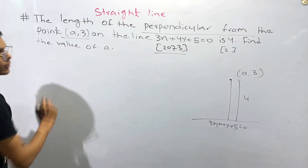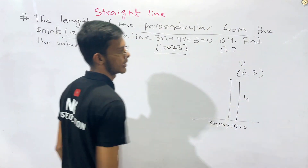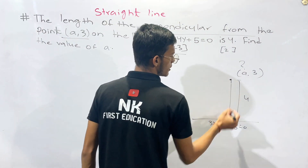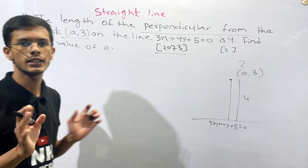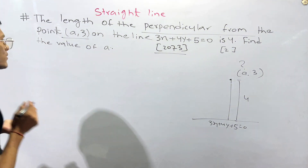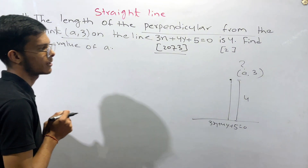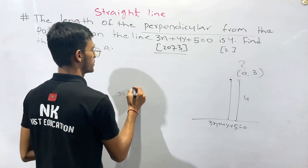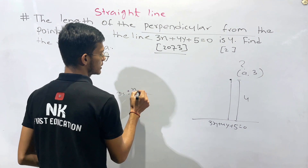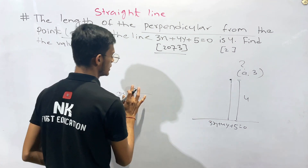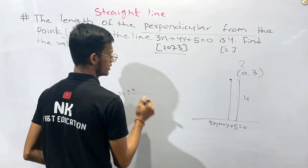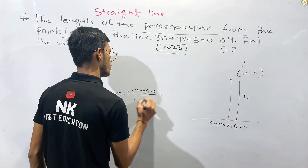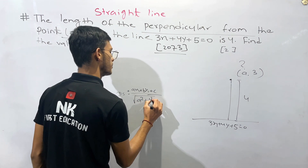The formula to find the distance is: ax1 + by1 + c, divided by the square root of a-squared plus b-squared.